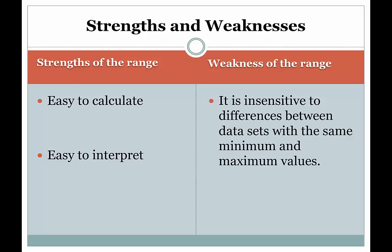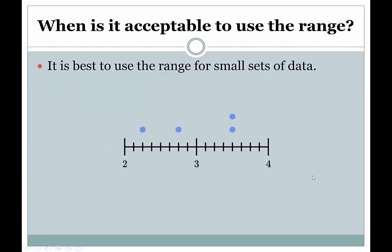In terms of their dispersion, it could be that one set is mostly clustered, but it has maybe an outlier on one end that happens to make the range similar to another dataset that's very spread out. So because of that inability for the range to detect the difference between those two types of datasets, we don't like to use the range when we have a very large number of values. So when is it acceptable to use the range?